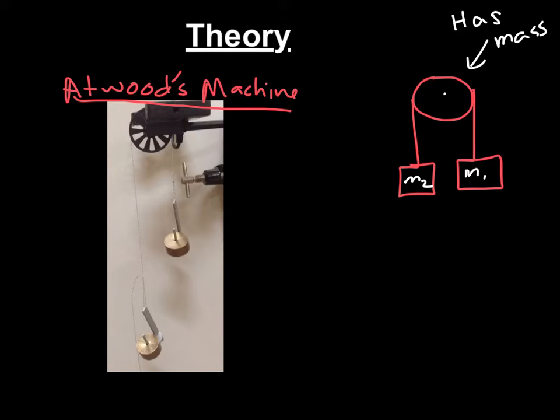So this is Atwood's machine. It may look like a pulley, but looks can be deceiving. And what you're going to do, it has two masses hanging on it. This is what makes a difference. You have one mass here, one mass here. If mass 1 is greater than mass 2, this mass is going to drop, this mass is going to go up. It's going to cause them to accelerate.